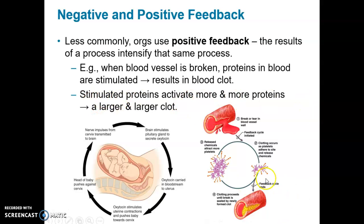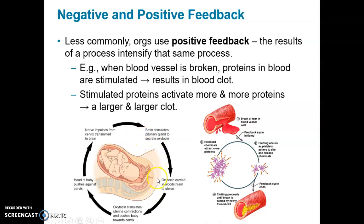Stimulated proteins activate more and more proteins, forming a larger and larger clot. Another example is labor. The first waves of muscle contraction on the uterus are not so strong and are fairly far apart in time. As contractions become more frequent and stronger, they increase in intensity and frequency until the baby is born. The process is accelerated because of the initial labor contractions — that's a positive feedback mechanism. The sequence of events shuts down once the baby is born.